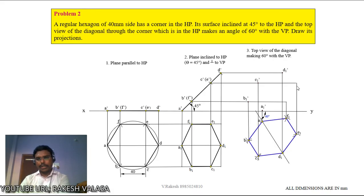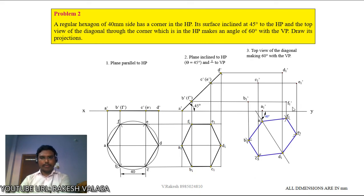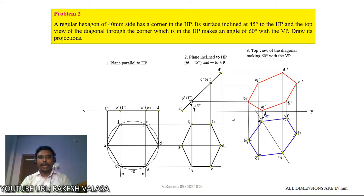Next, E1 vertical projector with E-dash horizontal projector gives E1-dash. F1 vertical projector with F-dash horizontal projector gives F1-dash. Now join all those points in sequence: A1-dash to B1-dash, B1-dash to C1-dash, C1-dash to D1-dash, D1-dash to E1-dash, E1-dash to F1-dash, F1-dash to A1-dash. This is the final front view. This is the final front view and final top view for the given problem.